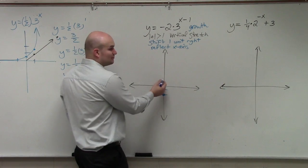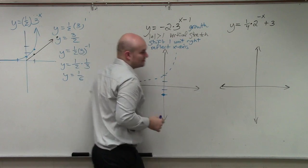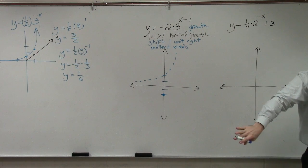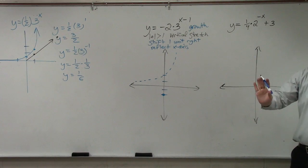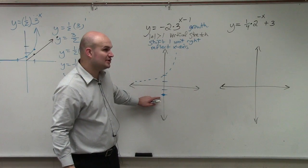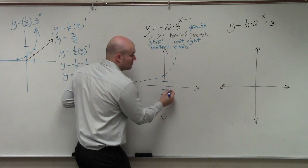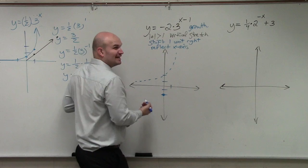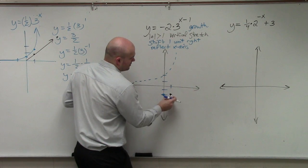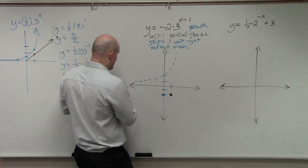Now, this originally was a growth, so the graph originally looked like this, correct? But now it's getting reflected, and then the graph is being shifted 1 unit to the right. So instead of it actually crossing at negative 2, it's being shifted 1 unit to the right. So it doesn't have that same y-intercept anymore because it's being shifted over. Here's my graph. I still have an asymptote, so the graph is going to look something like this.